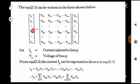The Y-bus matrix can be written as Y11, Y12, up to Y1n, and we also consider a term Y1p. The corresponding columns are Y21, Y31, Yp1, Yn1, and so on. This is an n×n matrix. The voltage matrix contains V1, V2, Vp, up to Vn. Here, Ip is the current injected to bus p, and Vp is the voltage of bus p.